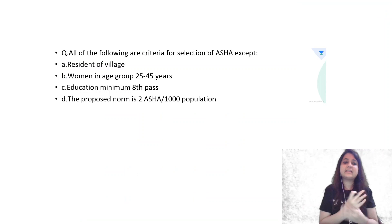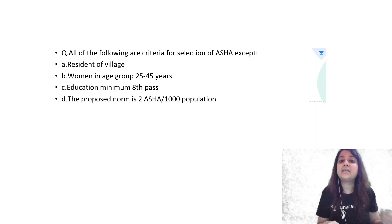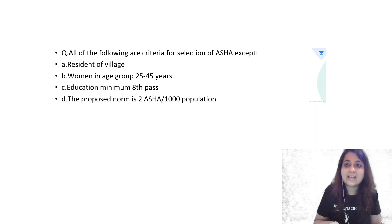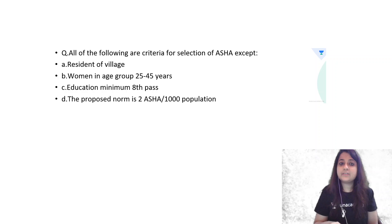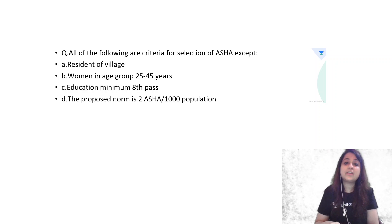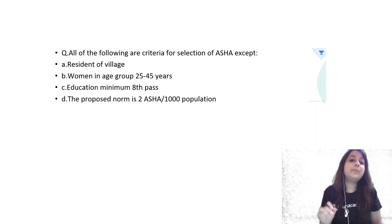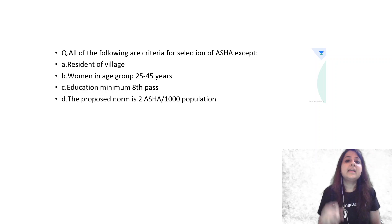So let's see the PSM-PYQ. All of the following are criteria for selection of ASHA except: resident of village, women in the age group 25 to 45 years, education minimum 8th pass. The proposed norm is 2 ASHA per 1000 population.